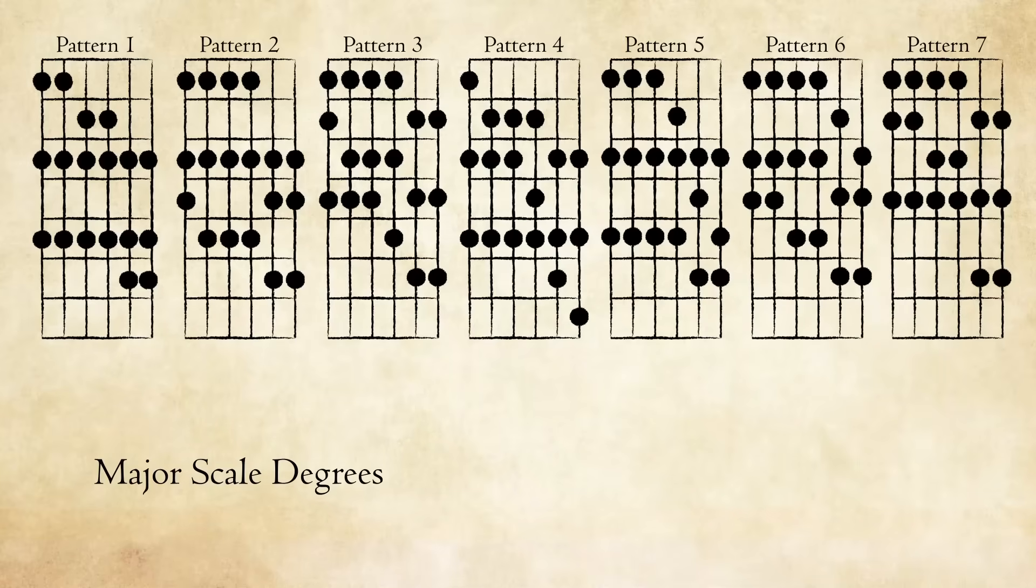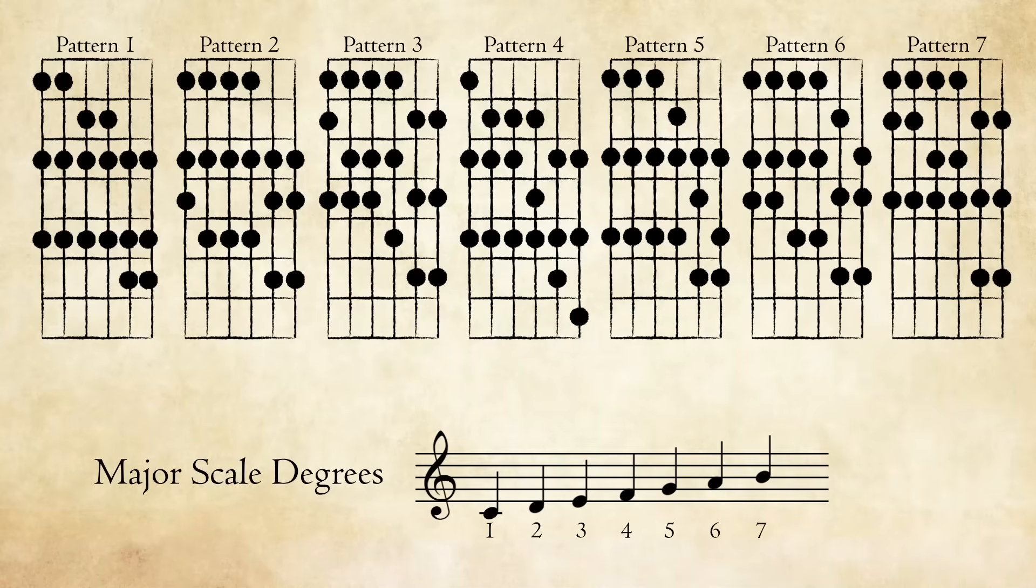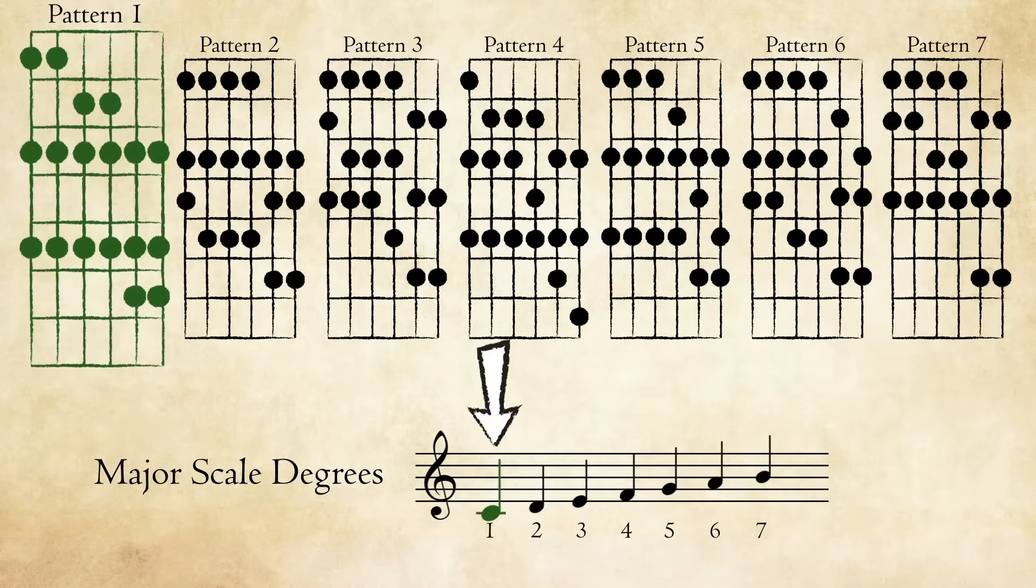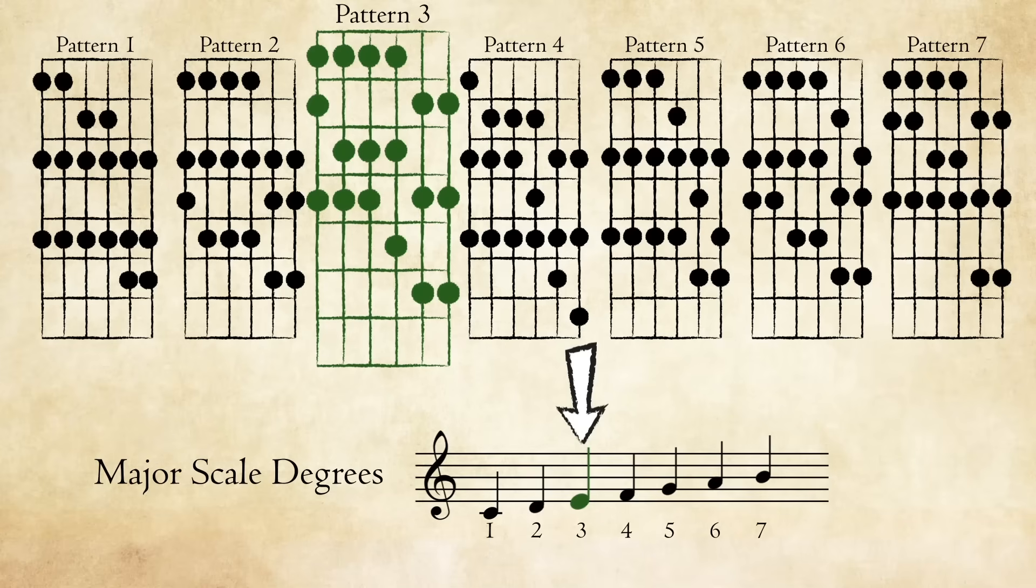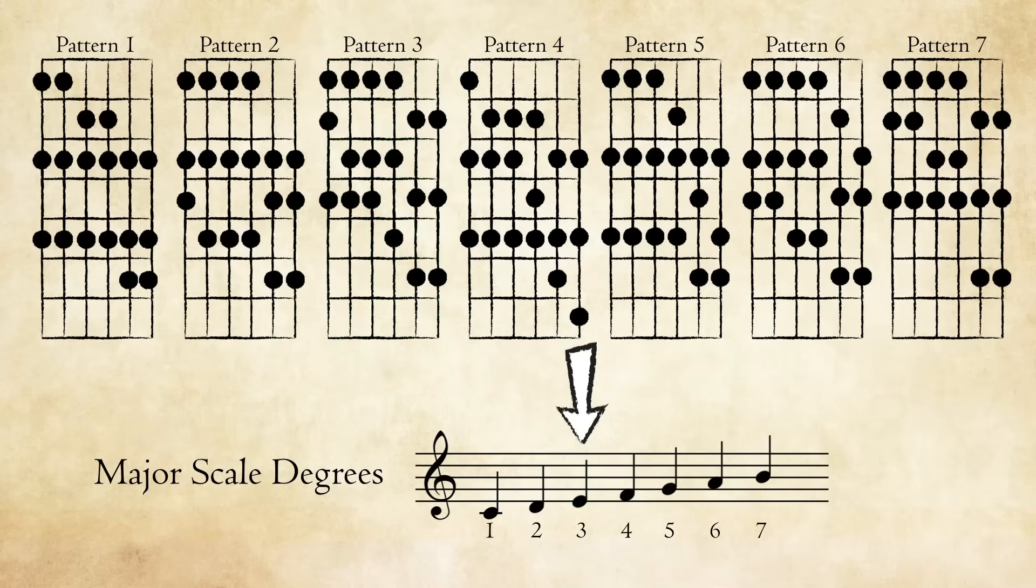To begin, we need to look at some patterns that outline the major scale. Each of these patterns starts the major scale on a different scale note, or scale degree. Pattern 1 starts on the first note or scale degree 1, Pattern 2 starts on scale degree 2, Pattern 3 starts on scale degree 3, and on up through 7.